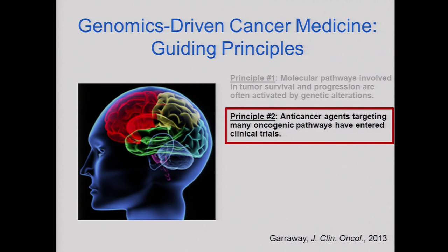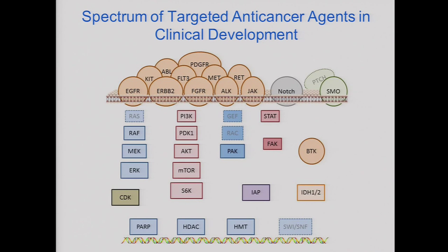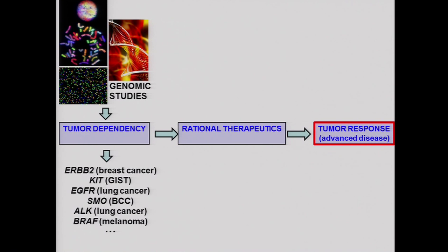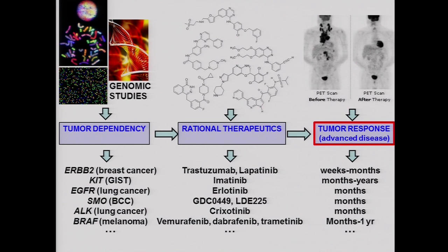The second principle is that we are now living in a special time in history: for the first time there are many anti-cancer agents targeting all of the classical oncogenic pathways in clinical trials. Here's a schematic showing well-known pathway effectors — the MAP kinase pathway, the PI3-kinase pathway, chromatin factors, receptor tyrosine kinases. If a box has a solid line around it, that means there's at least one drug targeting it in the clinic. This is the first time we have both the knowledge of a large swath of potentially actionable events and the experimental or FDA-approved compounds that could hit those altered pathways.